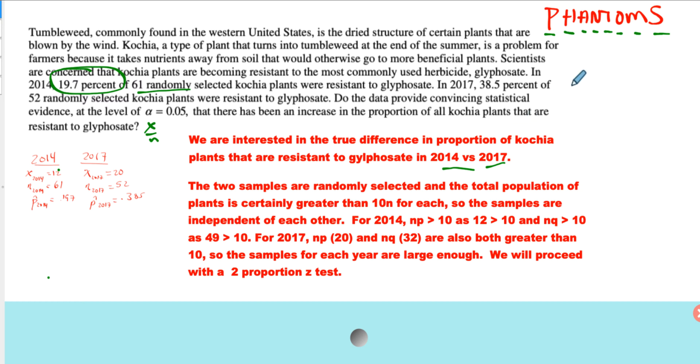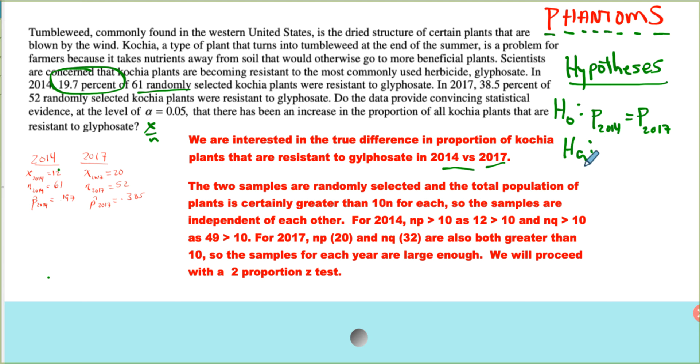Now, our hypotheses. So our hypothesis statement for the null—remember, the null is always that there's no difference between the two. So in this situation, that means that p of 2014 is the same as p of 2017. And then the alternative, that depends on the way they word the question. Are we trying to see if one is better, or are we just trying to see if they're different? If they're just saying are they different, then we have to do two-sided. It'd be not equal to. But the question here is, has there been an increase? So we want to see if 2014 is less than 2017 for each proportion.